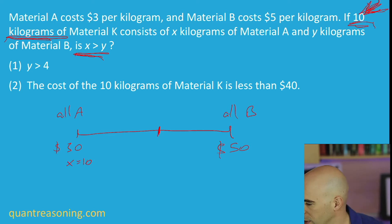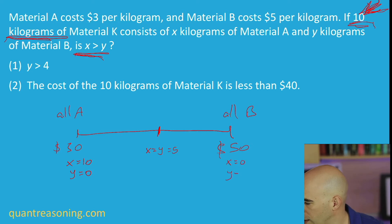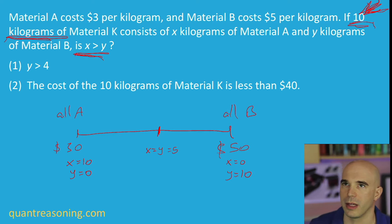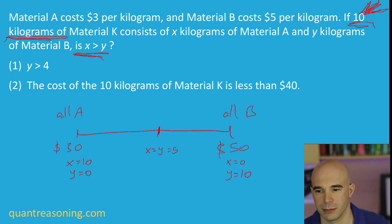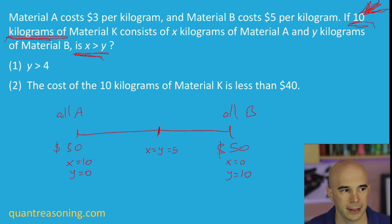We have X equals 10 and Y equals 0 on the left side. In the center, we have X equals Y equals 5. And on the right side, X is 0 and Y is 10. So as we move from left to right, X gets smaller and Y gets bigger, and at the center they're equal. This midpoint is $40.